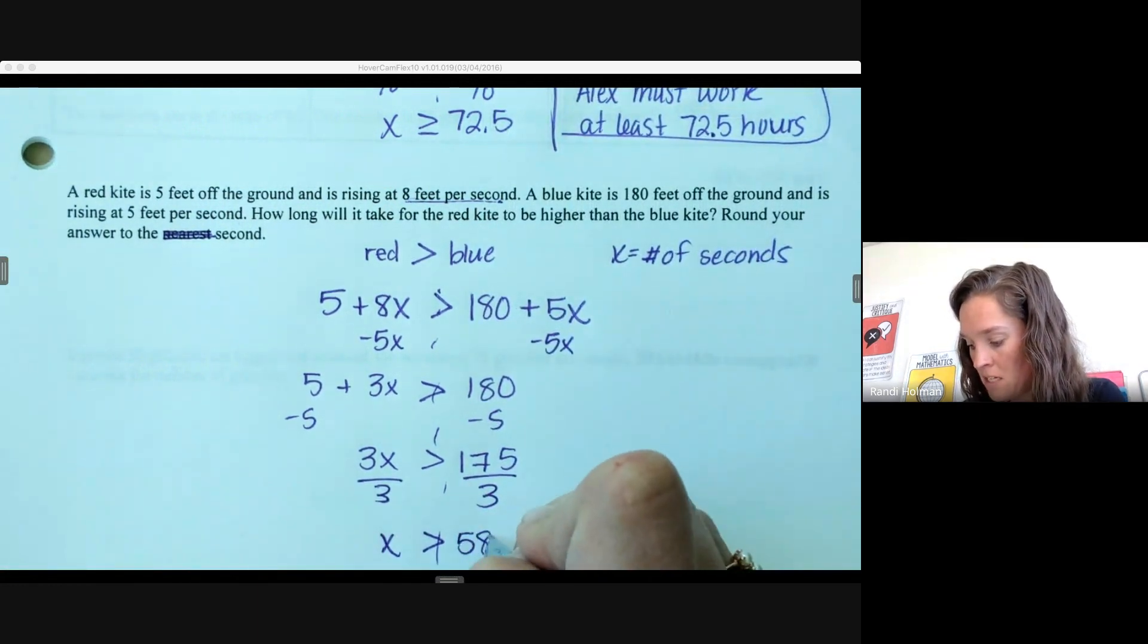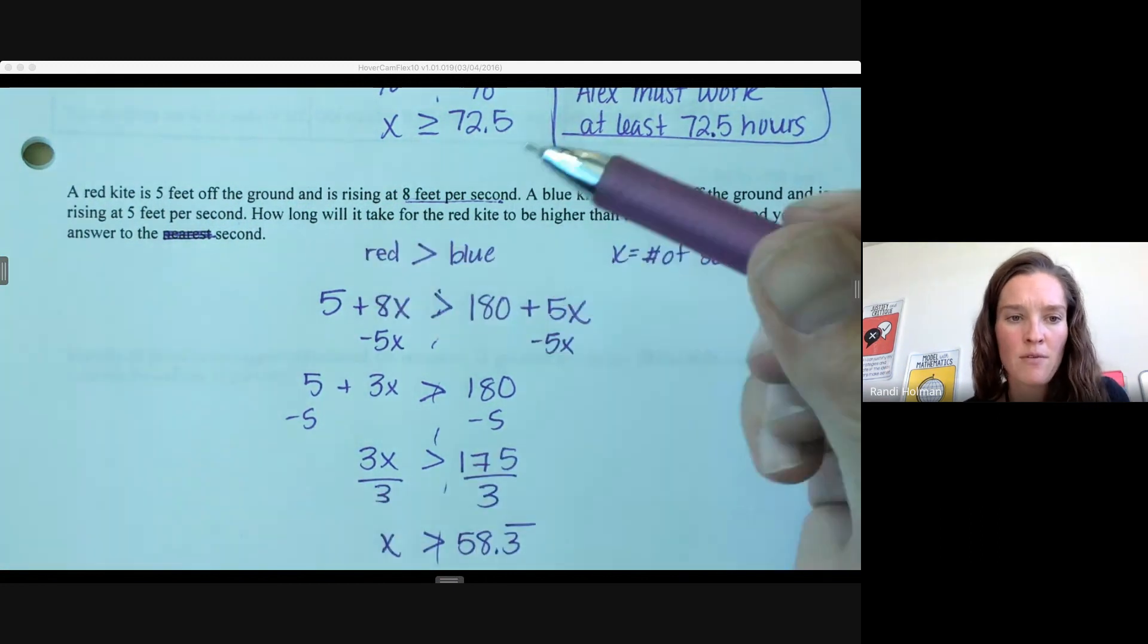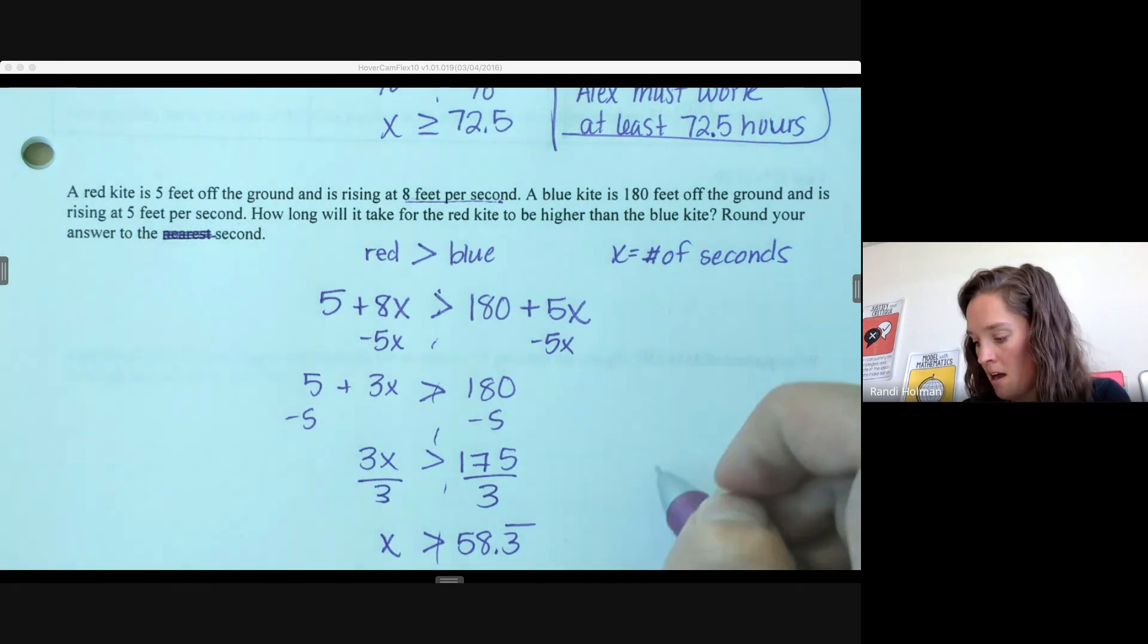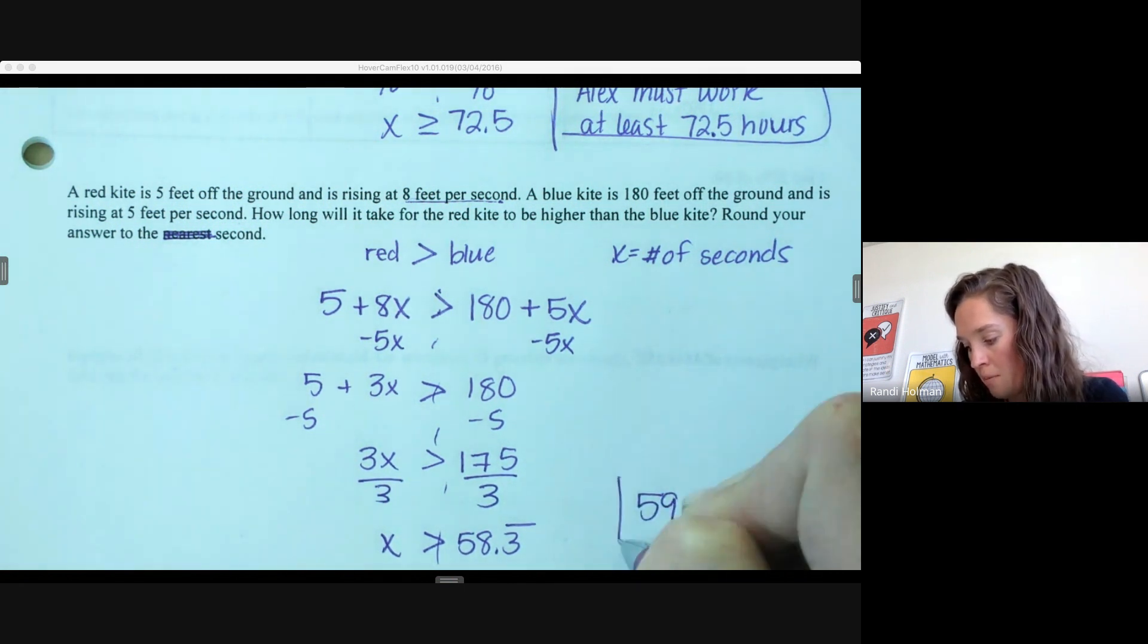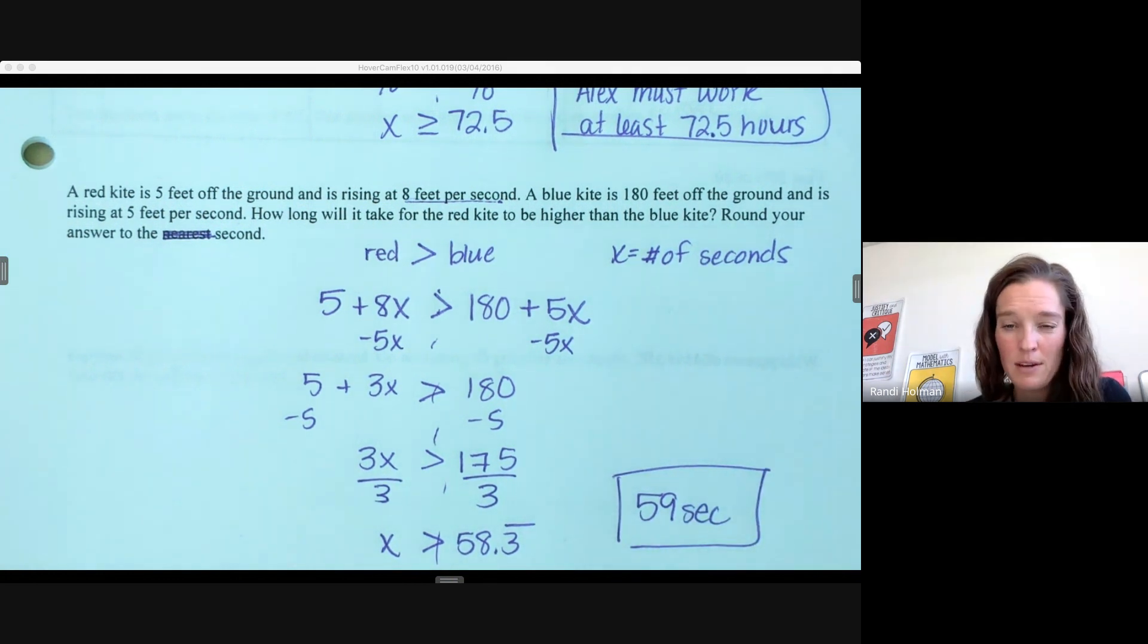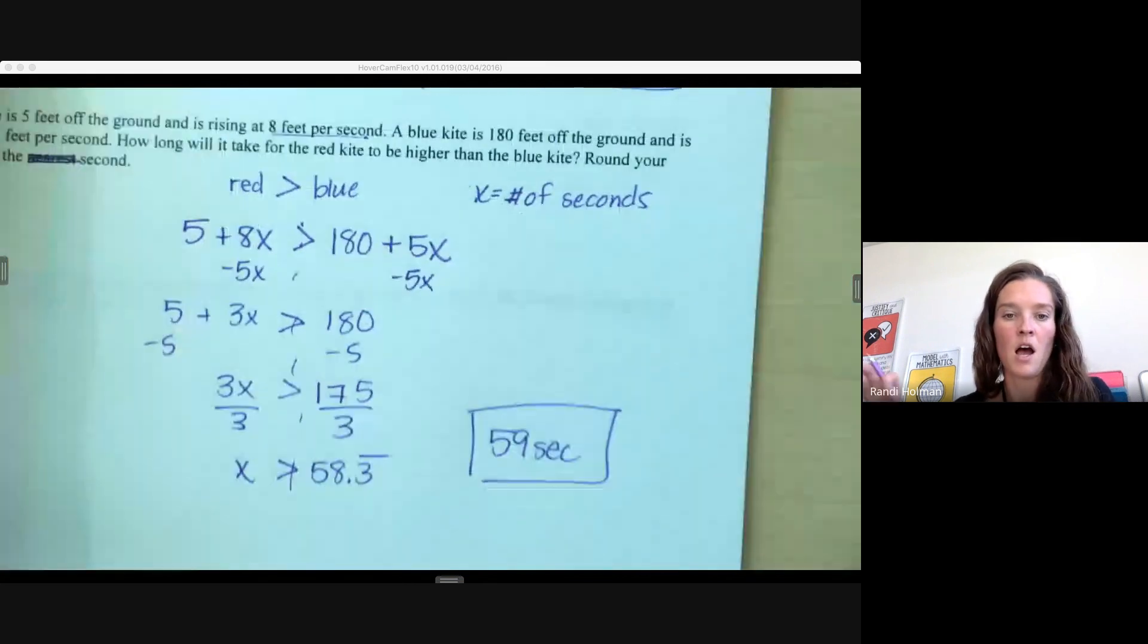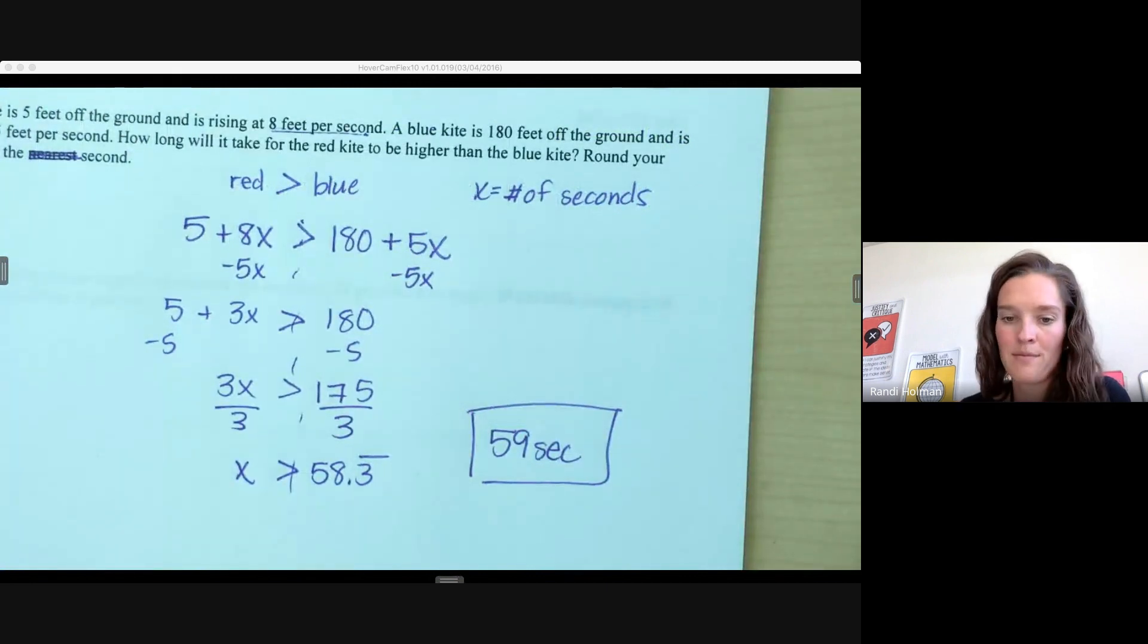So x has to be greater than 58.3 repeating. This is where we come back to rounding your answer to the second. If x has to be greater than 58.3, if we go down to 58 seconds, the red kite is not higher than the blue kite. So it needs to rise for at least 59 seconds—one more second, and it will be higher. 59 is greater than 58.3; 58 is not. Be careful when you're looking at your context—you're putting it back in context with some logic and reasoning involved. That is all for our inequalities today. Thank you for watching.